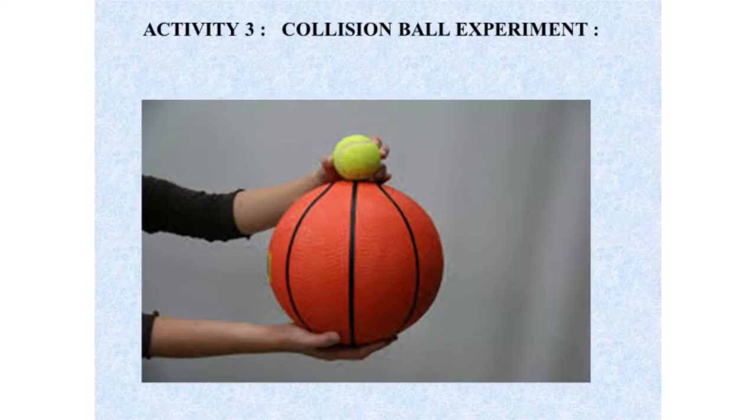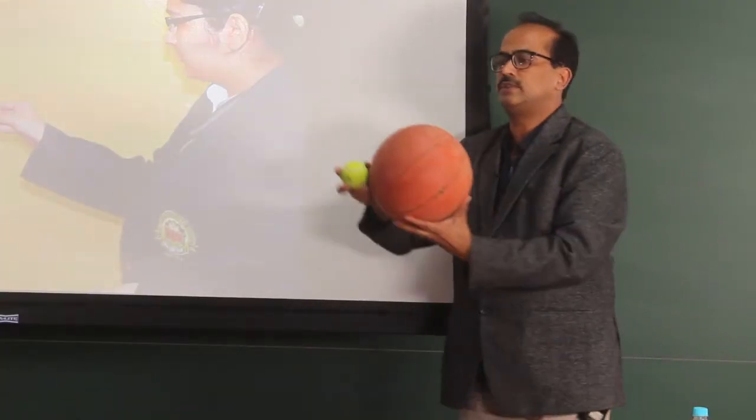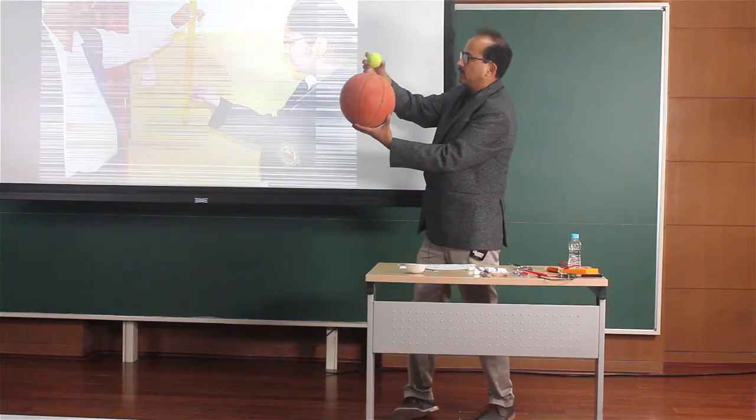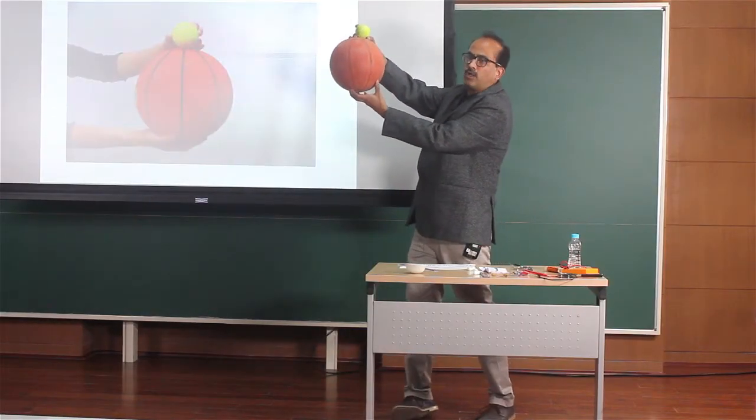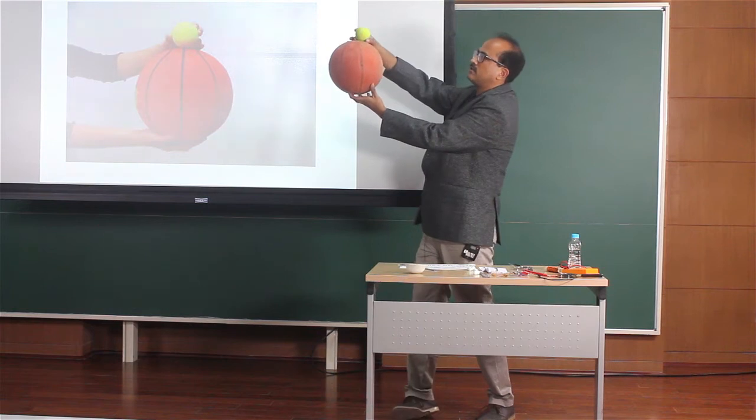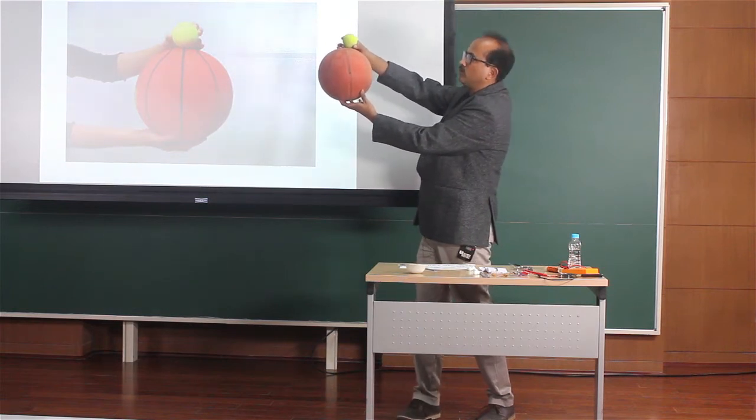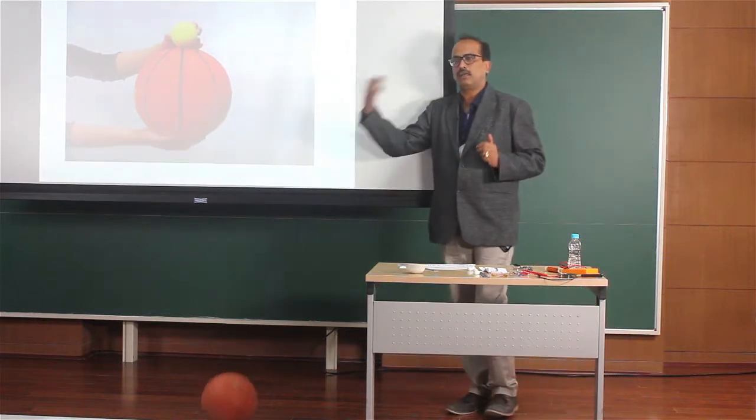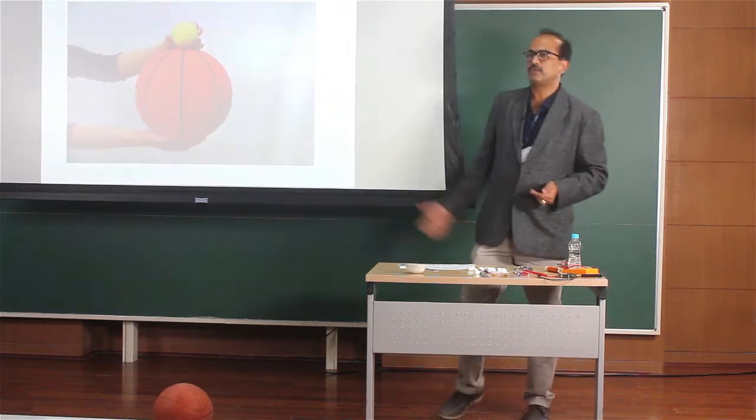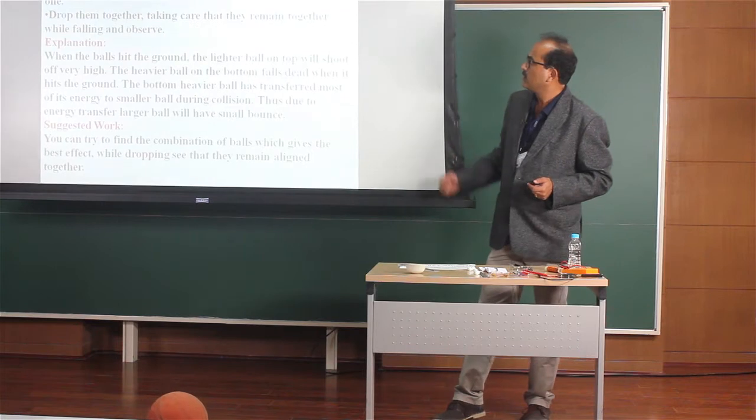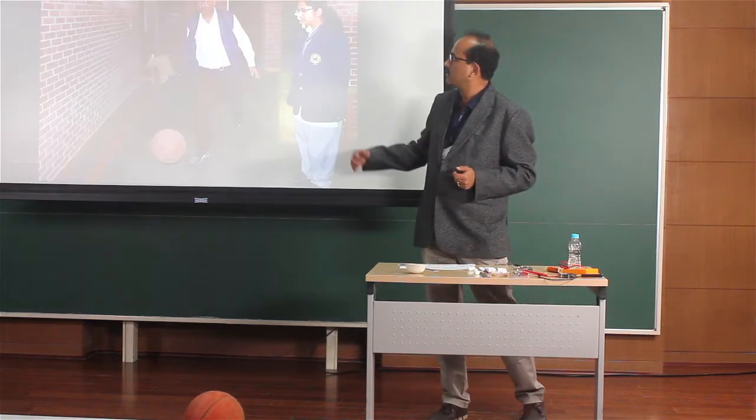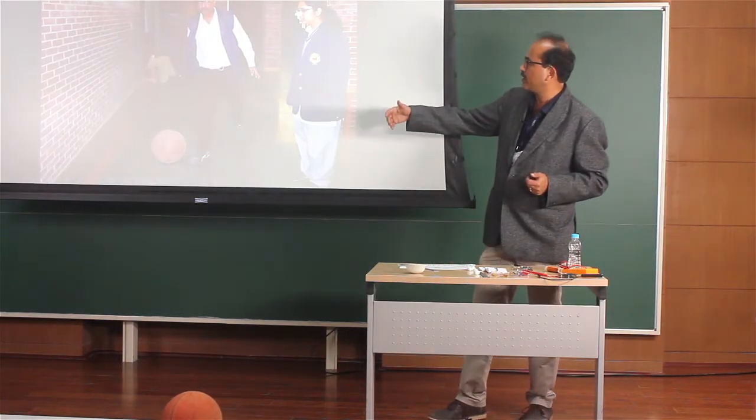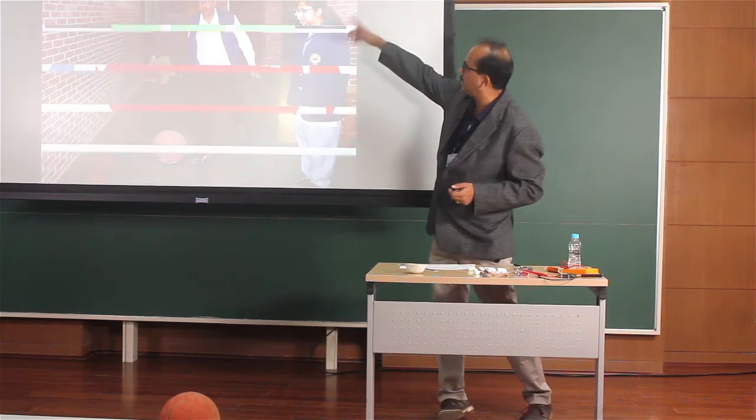The next experiment is on the collision ball experiment. For this you have to take a basketball and a tennis ball and you can place them aligned together. When you throw them you will see that the lighter ball will shoot. The heavier ball has transferred the energy to the lighter ball. You can see that the lighter ball is jumping up.